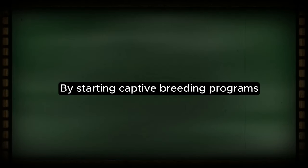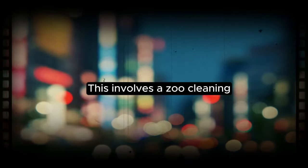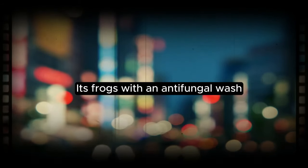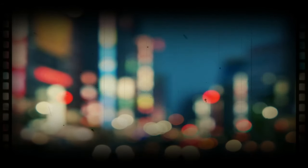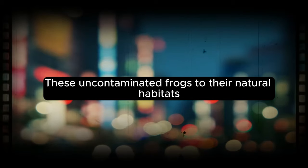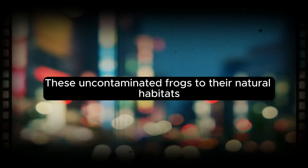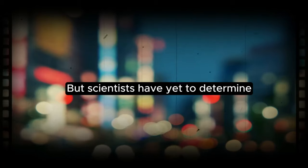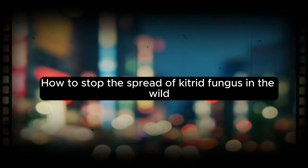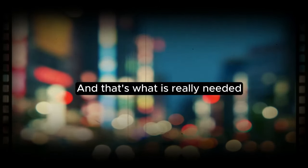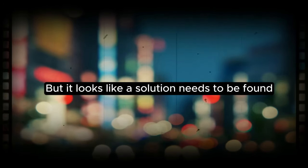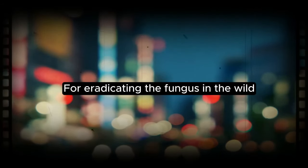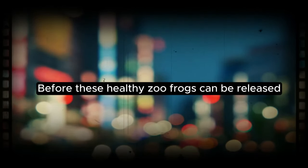Many zoos are helping to combat the problem by starting captive breeding programs. This involves a zoo cleaning its frogs with an antifungal wash and then isolating them in order to prevent the possible spread of the fungus. The zoos will eventually return these uncontaminated frogs to their natural habitats. But scientists have yet to determine how to stop the spread of chytrid fungus in the wild. And that's what is really needed. It's encouraging that there's a conservation plan, but it looks like a solution needs to be found for eradicating the fungus in the wild before these healthy zoo frogs can be released.